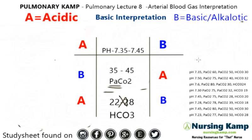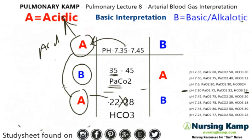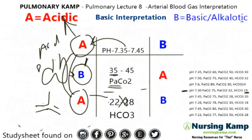Next one — the pH is 7.30, so we circle the acidic side since it's less than 7.35. PACO2 is less than normal, so we circle that one too. The bicarb is 19, which is less than 22, so we circle that one. We match the two letters together — this is an acidosis condition. The PACO2 is lungs so it's respiratory, but it's not matching the pH. The bicarb matches — that's the kidneys, so it's metabolic. We have metabolic acidosis.